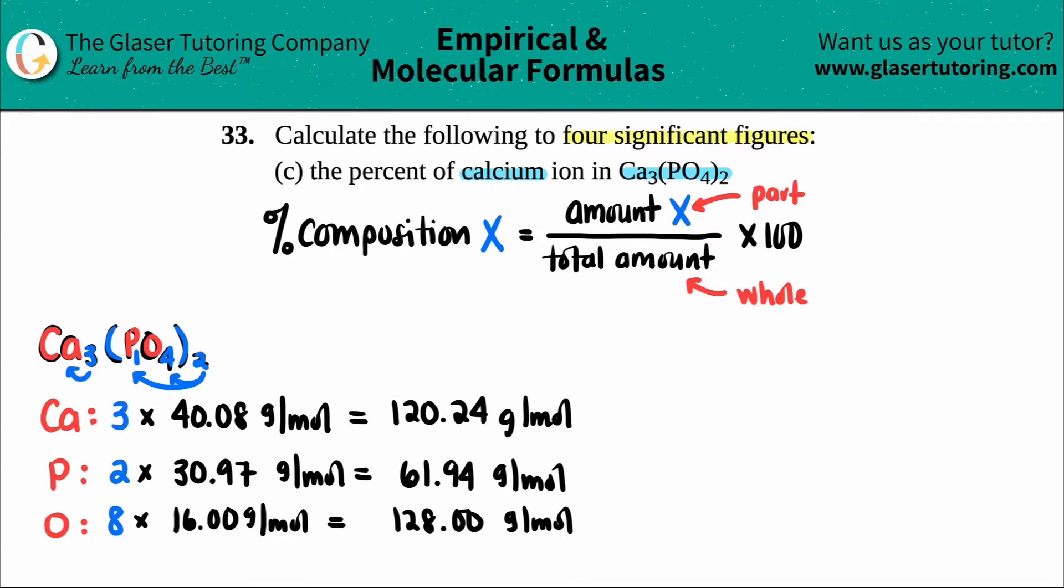Now to find the total molar mass, all you have to do is just add the three numbers up. So the 120.24 plus the 61.94 plus the 128. So my total molar mass would be 310.18 and that's in grams per mole. But just know that this is the total amount. That's going to go on the bottom.